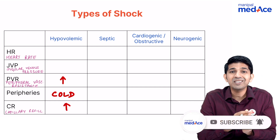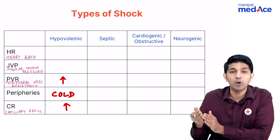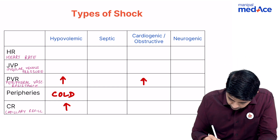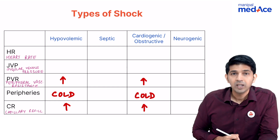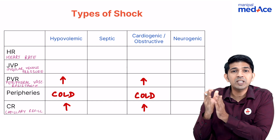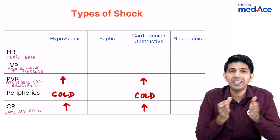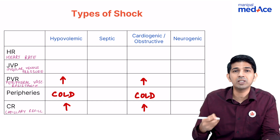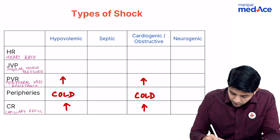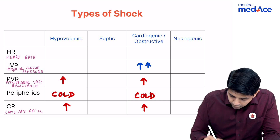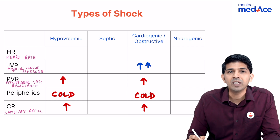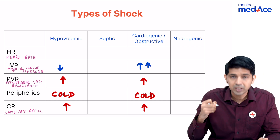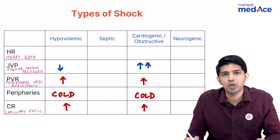Copy the same features onto cardiogenic or obstructive shock. How do you differentiate between cardiogenic and hypovolemic shock? Patients with cardiogenic or obstructive shock will have elevated levels of JVP, whereas JVP will either be normal or low in patients with hypovolemic shock.